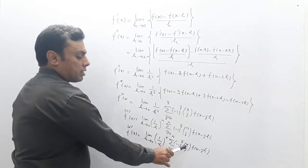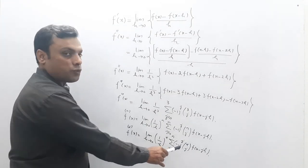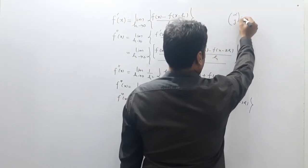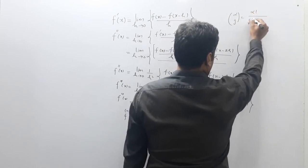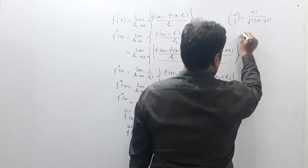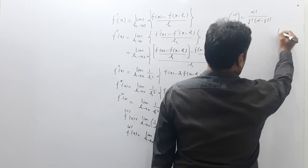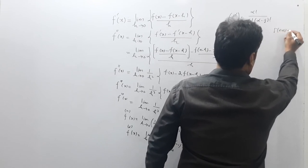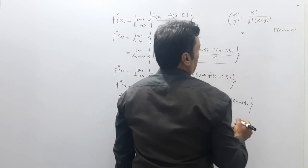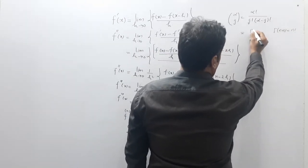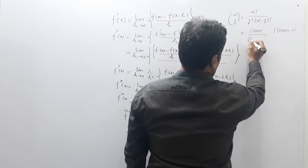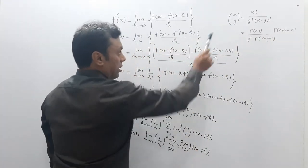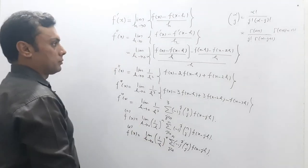There is one hurdle: we need to define C(α, j) for arbitrary alpha. We know that C(α, j) equals α! divided by [j! times (α minus j)!]. Using the gamma function definition — Γ(n+1) = n! — this becomes Γ(α+1) divided by [j! times Γ(α minus j + 1)]. Substituting this expression for C(α, j) into the formula gives the generalized definition.